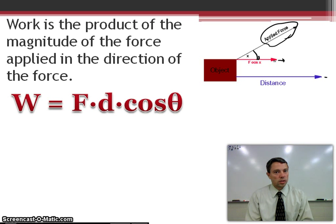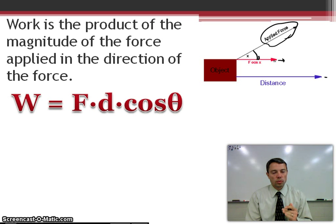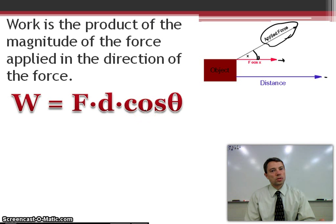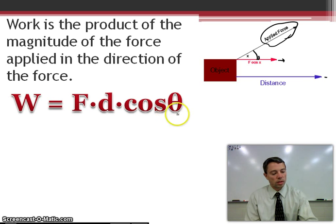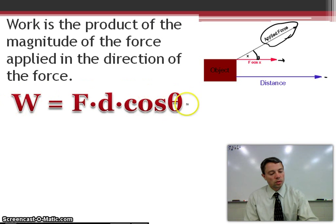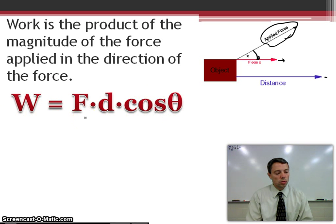Here's an interesting thing: if you're already applying the force in the same direction as that distance, you would have a zero angle, and the cosine of zero is always one. So this is the formula that's written up on the board, and this is what we're going to use.